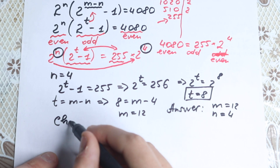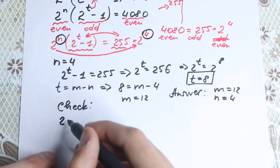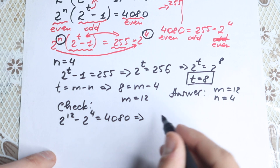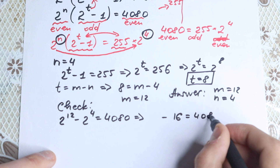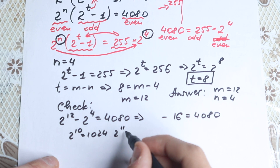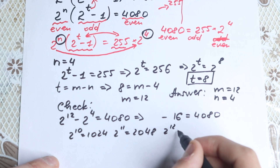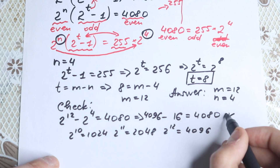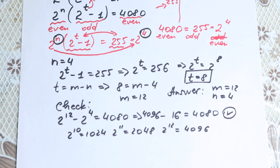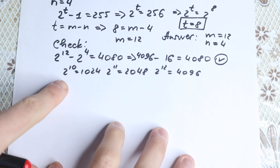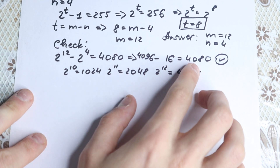Let's verify quickly. We check: 2 to the power 12 minus 2 to the power 4 equals 4080. We know 2 to the fourth equals 16. For 2 to the 12th: 2 to the 10th is 1024, times 2 is 2048 for 2 to the 11th, and times 2 again gives 4096 for 2 to the 12th. So 4096 minus 16 equals 4080 — correct! A lot of students could solve it by inspection since 2 to the 10th is a well-known value, and multiplying by 2 gets you closer to 4080.